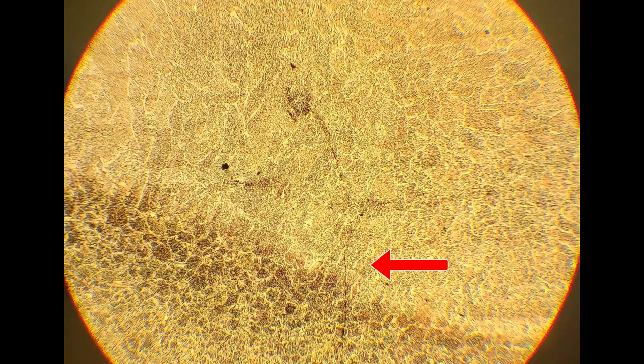In image 1, the epitaxial grain growth is evident in the area marked by the arrow. It shows a transition where the grains align and grow from the base material into the weld zone.